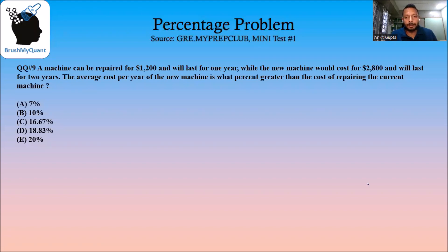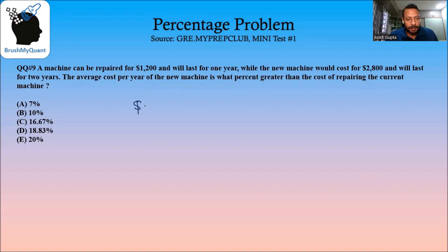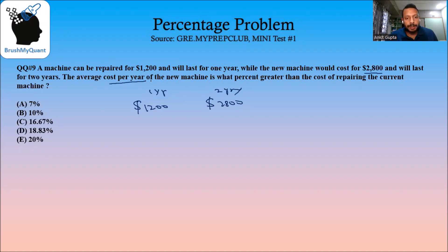We have taken this problem from gre.myprepclub, from their mini test one. A machine can be repaired for $1,200 and will last for one year, while a new machine would cost $2,800 and will last for two years. The question asks: the average cost per year of the new machine is what percent greater than the cost of repairing the current machine?